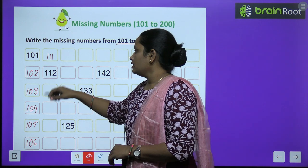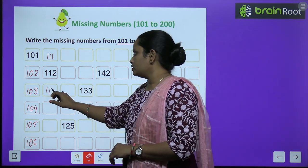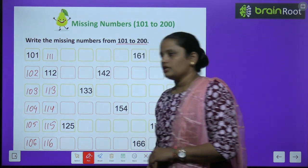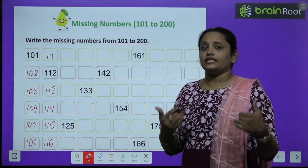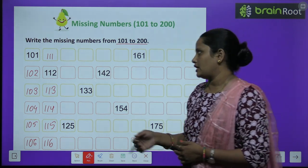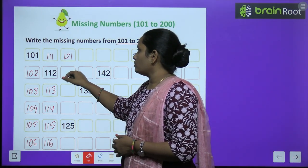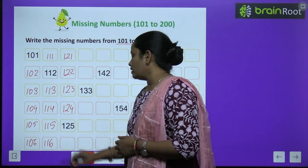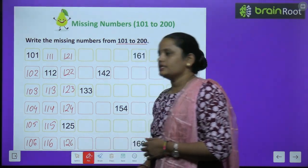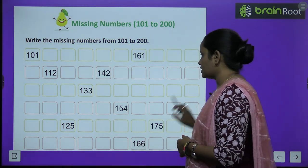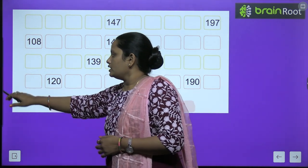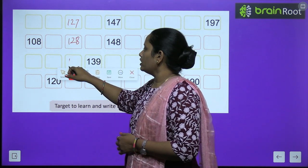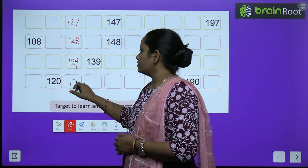Next, you can see here: 111, 112, 113, 114, 115, 116. The remaining 117, 118, 119, 120 are on the next page. Similarly after 120 comes 121, 122, 123, 124, 125, 126. After 126 on the next page: 127, 128, 129 and 130.